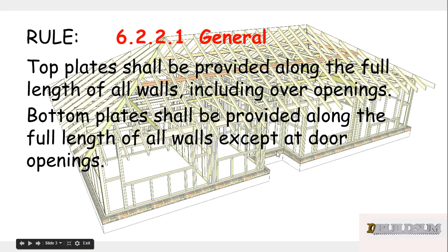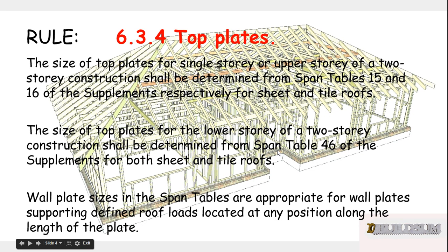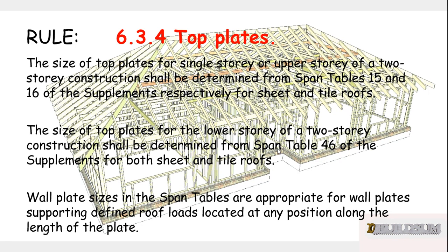Rule 6.2.2.1 says the top plates shall be provided along the full length of all walls, including over openings. The size of top plates for single storey or upper storey of a two-storey construction shall be determined from span table 15 and 16 of the supplements respectively — sheet roofs use table 15, tile roofs use table 16.